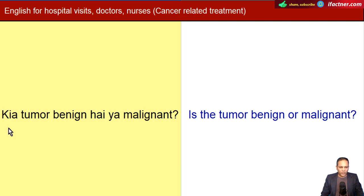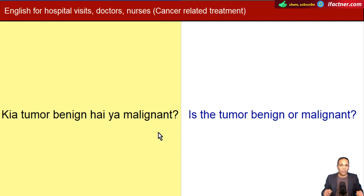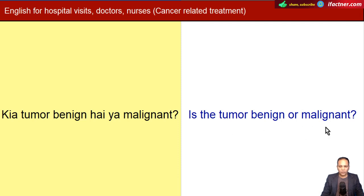Doctor say poochha ja sakta hai, kya tumor benign hai ya malignant? Cancer ke jo tumor hote hain do qisam ke ho sakte hain - mainly ek benign, jo ki apni jagah se nahin zyada phehlta baaki body parts mein. Jabki doosra jo khaternaak hota hai wo hota hai malignant. Uske body mein phehlne ke zyada chances hote hain, woh zyada khaternaak hota hai. Toh doctor say poochha ja sakta hai: Is the tumor benign or malignant?